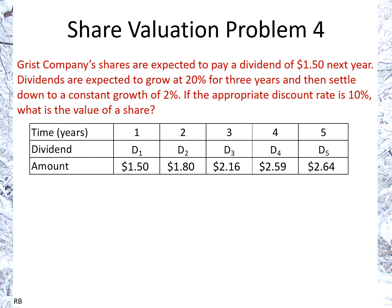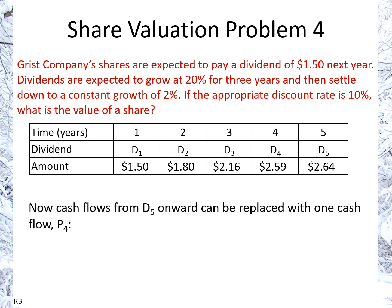Now we have all the dividends. We can replace D5 onwards with one cash flow, which is P4, using the equation. P4 equals D5 over r minus g — that equals $2.64 divided by 10% minus 2%, which is 0.08. That gives us a result of $33.05. That's P4.